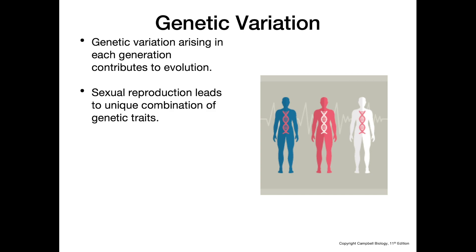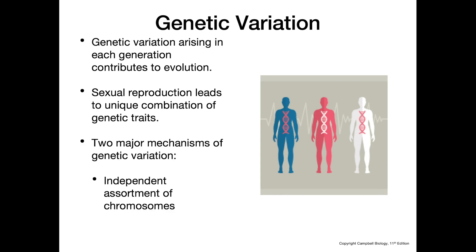Sexual reproduction leads to unique combinations of genetic traits because of a couple of different mechanisms, including independent assortment and crossing over. Those two major mechanisms — independent assortment and crossing over — are what we'll talk about shortly.